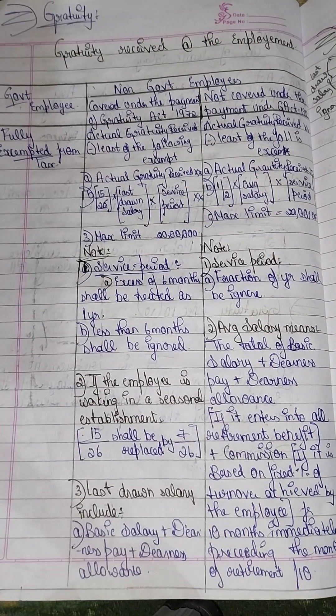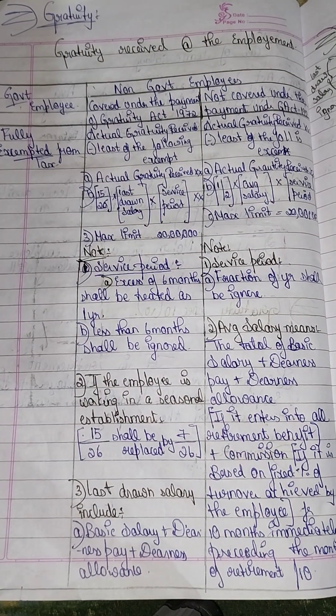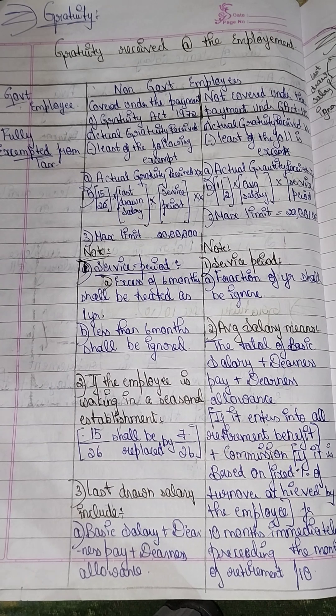So this is simple. The payment received from the employer at the time of retirement is called Gratuity.